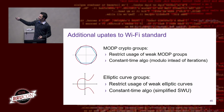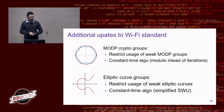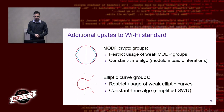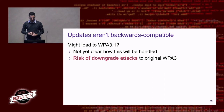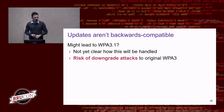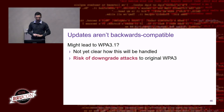The updated standard also provides clearer guidelines on which elliptic curves and modP groups are secure versus weak. This may lead to a WPA3.1, though it's unclear how this will be handled in practice. There is still a risk of downgrade attacks where implementations could be forced back to the first version of WPA3, which remains vulnerable.